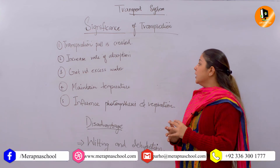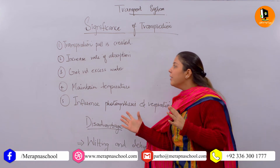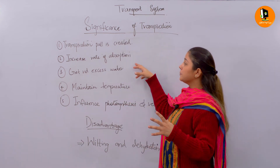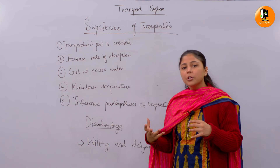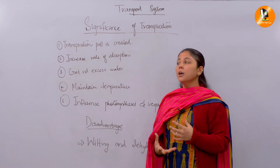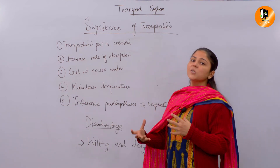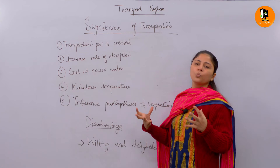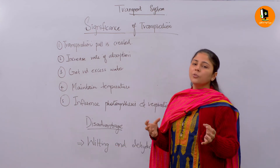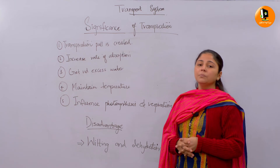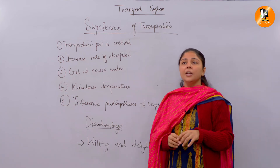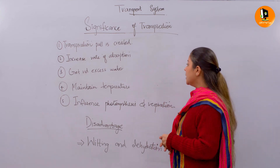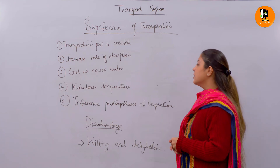The third important significance is getting rid of excess water. Both processes are interlinked — when the plant absorbs more and more water, the concentration inside can become disturbed. Transpiration provides a very important function: it allows the plant to get rid of excess water by losing water molecules through the surface, preventing concentration imbalance that could disturb all the activities going on in the plant.